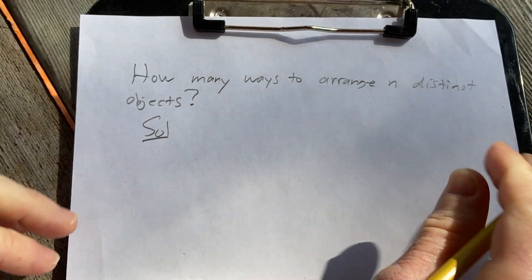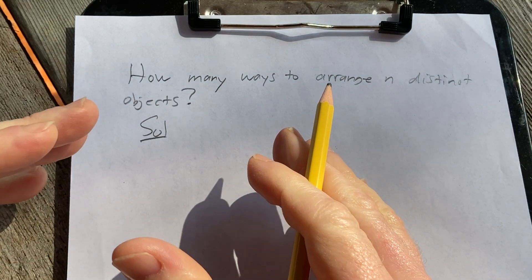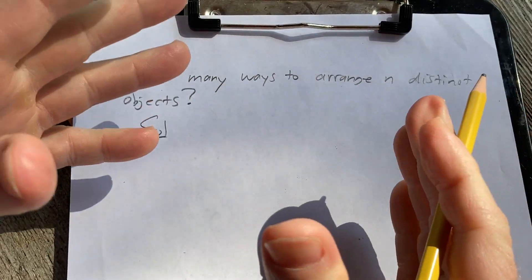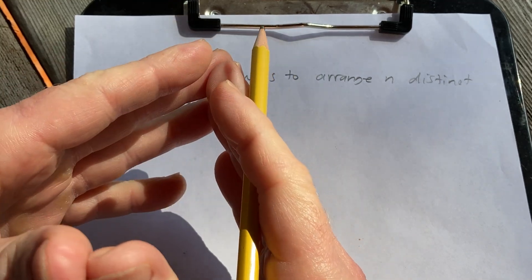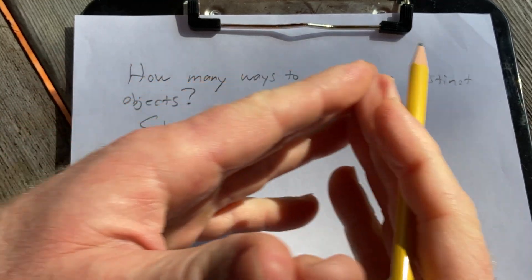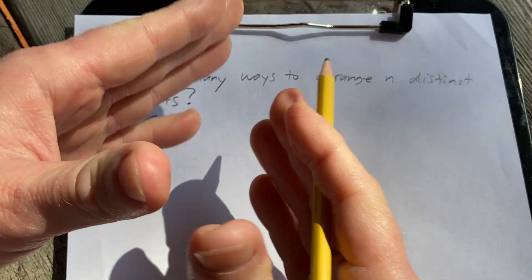Solution. We're going to use something called the multiplication rule. The multiplication rule says, for two objects, if you have n1 ways of doing something, and then for each of those ways there's n2 ways to do something else, then the number of ways to do both things is the product. You multiply n1 times n2.